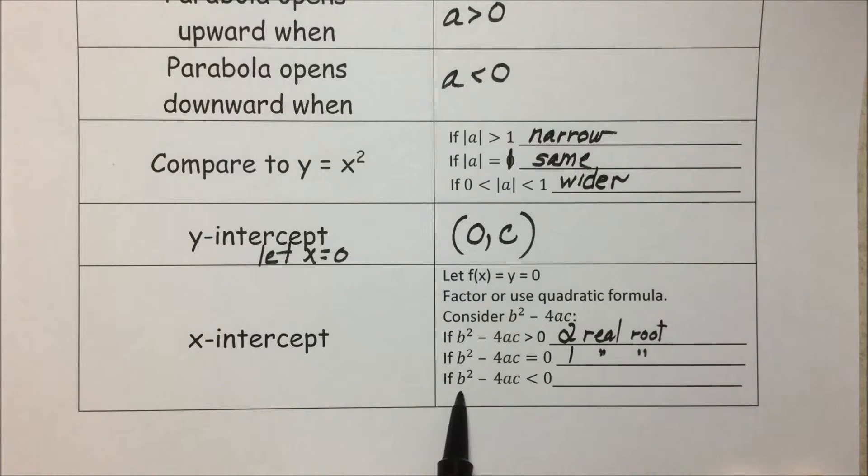If the discriminant is less than 0, we would have two imaginary conjugates.